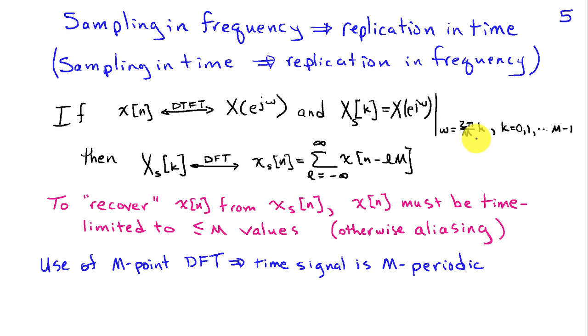And our sampling interval is inversely related to the duration of the signal in time. Just like when we sampled signals in time, we saw that the sampling interval was inversely related to the bandwidth of the signal. And the same argument, they couldn't overlap.